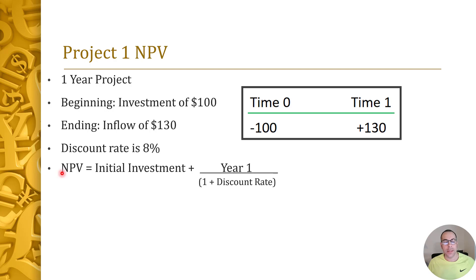The NPV, the net present value, is the value of this project in today's dollars. So you take the initial investment plus year one return over one plus the discount rate. The initial investment is $100, so it's negative $100 plus $130, that's what we're going to receive at the end of year one, over 1.08. We need to discount that dollar amount because we need to figure out how much $130 is worth in today's dollars.